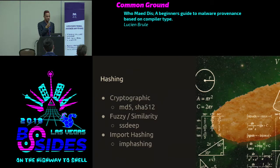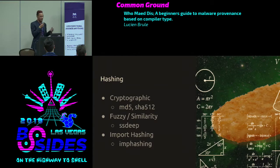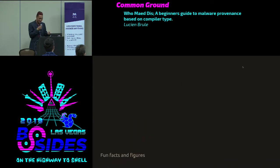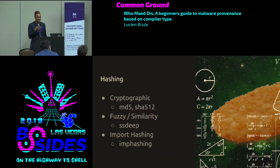Then you have import hashing, which is essentially a hash of everything a program uses in its import table — what libraries it uses. That tells you what it does because if you know it's importing things for cryptography, network requests, or file access, you can infer behavior. Things with similar imports will essentially have the same import hash.